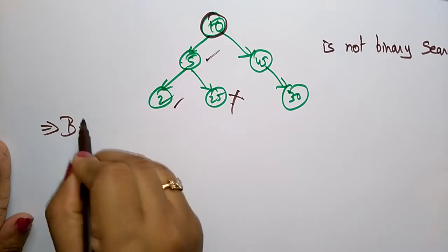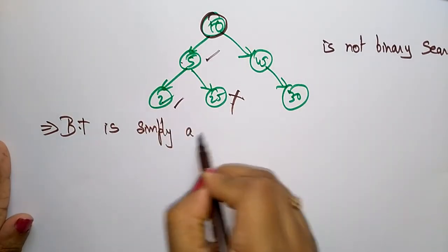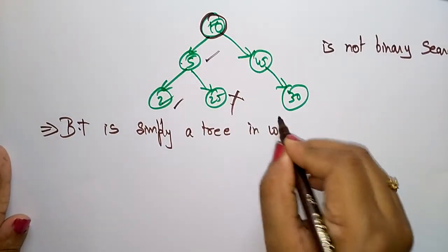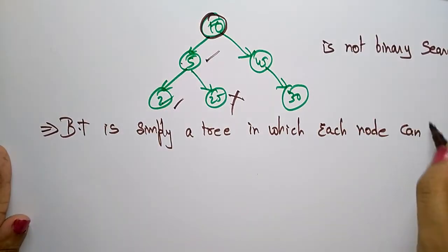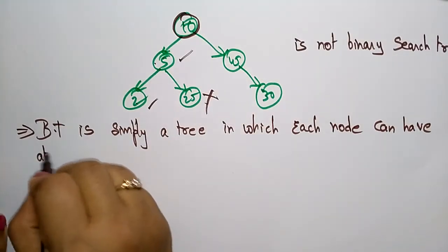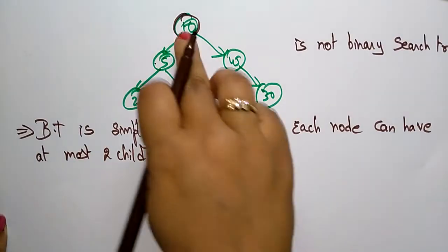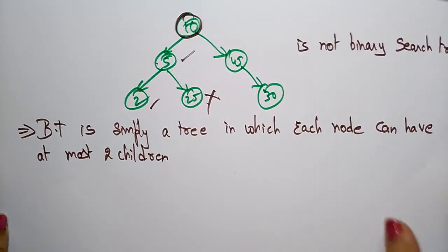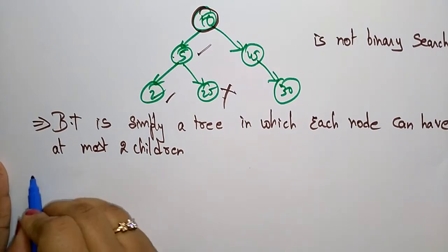Let me show you the difference. A binary tree is simply a tree in which each node can have at most two children. So whatever node you have taken, it can have at most two children — 0, 1, or 2 children.